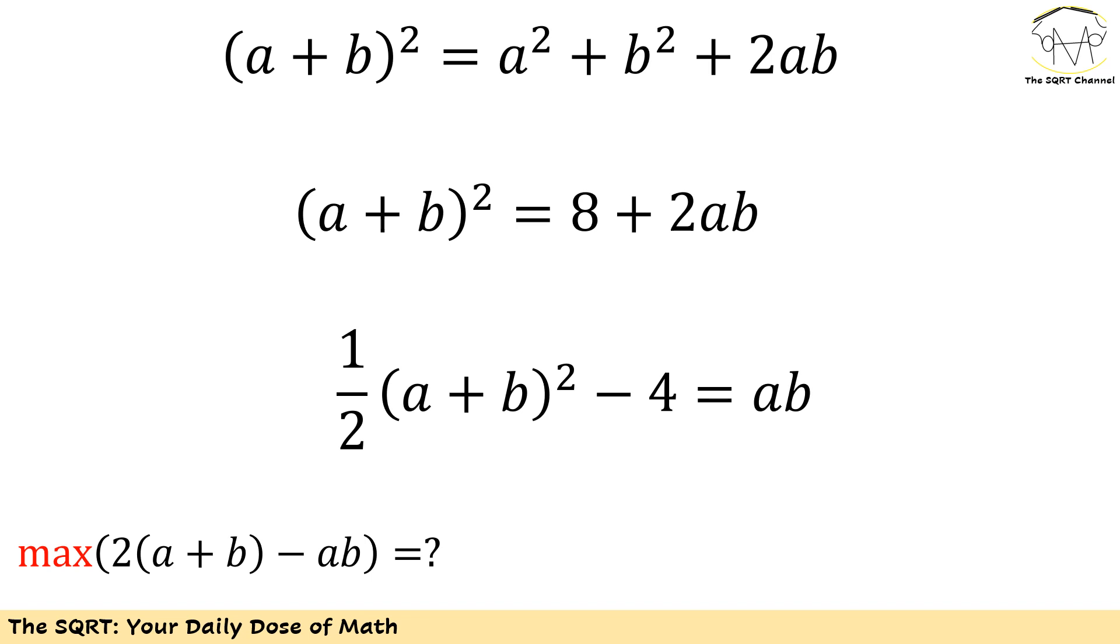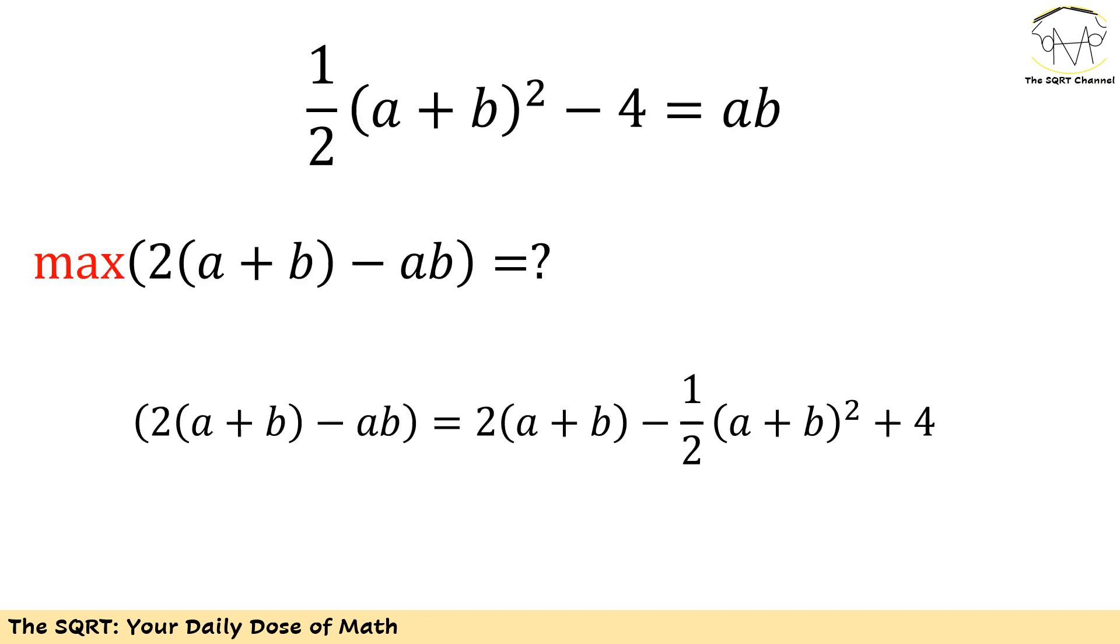Since I have ab, I'm going to replace that in the original problem. In the original problem I was looking for 2 times a plus b minus ab. Replacing ab is going to give me 2 times a plus b minus 1 over 2 times a plus b to the power of 2 plus 4.